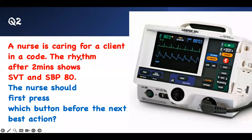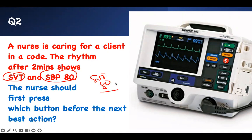Second question: A nurse is caring for a client who develops supraventricular tachycardia with a systolic pressure of 80 — they are unstable. The nurse should press which button first? This patient needs synchronized cardioversion. You must press the sync mode button on the defibrillator before you shock them to convert it to synchronized cardioversion. Don't forget — sync mode on. That's the right answer.